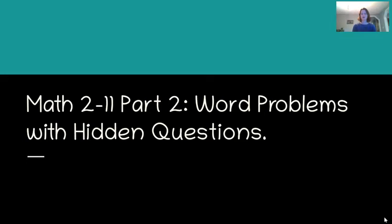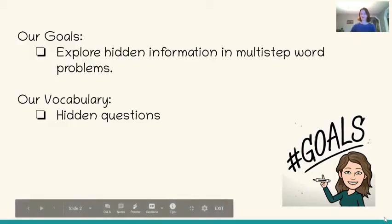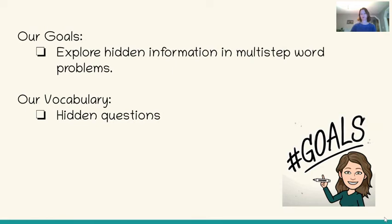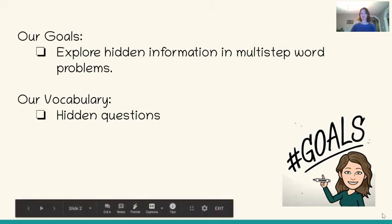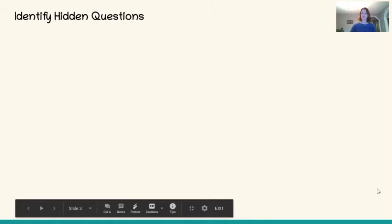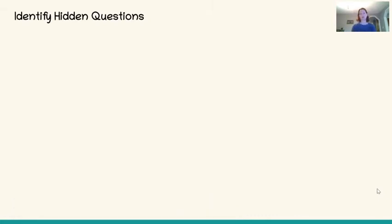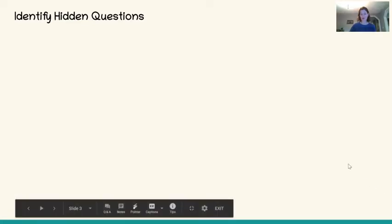Hi fourth graders, welcome to lesson 11 part 2. Today we are talking about word problems with hidden questions, and our goal is to explore hidden information in multi-step word problems. We're just going to be talking about those hidden questions. So the first thing we need to do in a multi-step word problem is to identify if there is a hidden question or some information that we haven't quite been told in the question.